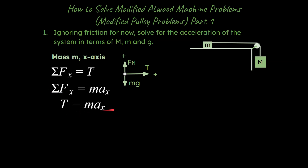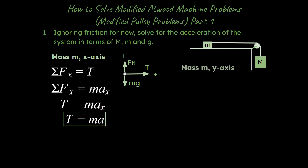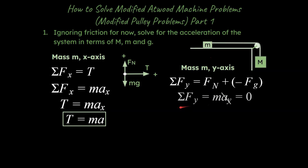Then Newton's second law means there's an equivalency between the sum of the forces and mass times acceleration in that axis. So tension is equal to m times a. I'm going to change this to a generalized a, because the acceleration for little m is going to be the same as the acceleration for big M. So rather than using acceleration in x and acceleration in y as two different variables, I'll just call it acceleration — that's more helpful. At this point I'll also do the sum of the forces in the y-axis for little m.